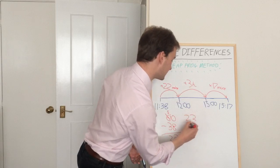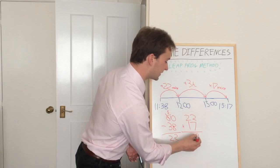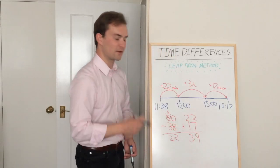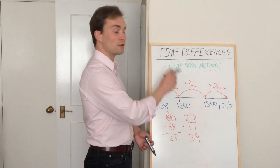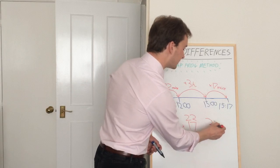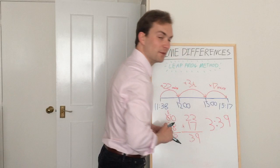22 plus 17. 2 plus 7 is 9, and 2 plus 1 is 3. So therefore we've got 39 minutes. We also have our three hours, so therefore we'd have a total time of 3 hours and 39 minutes.